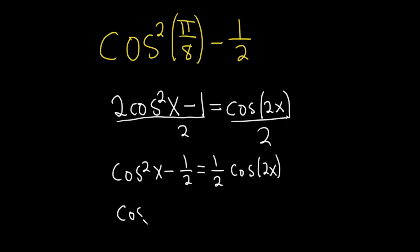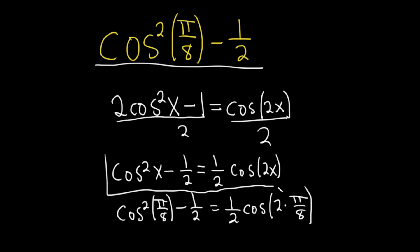So now all we have to do is plug in the pi over 8 into our new formula. So this is the cosine squared of pi over 8 minus 1 half, right? Just replacing x with pi over 8 so we can do this. And so this is equal to 1 half cosine of 2 times x. And our x here is pi over 8. So this is the key step. We're just applying this new identity, which we created from this one.